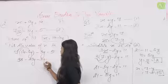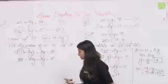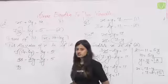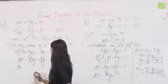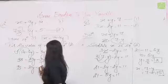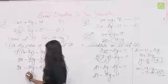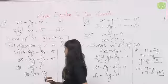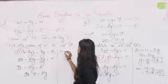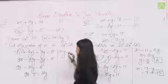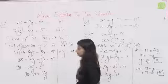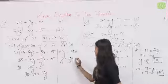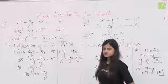5 को यहाँ भेज देते हैं: 98 − 5 = 31y, so 93 = 31y, so y = 93/31 = 3। y की value मिली: 3।